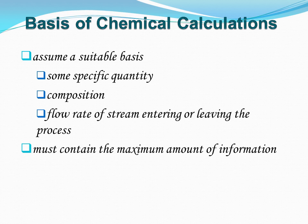If the flow rate is specified as a basis in the problem, assume it as a basis of calculation. If the basis is not specified in the problem, assume a suitable basis which will simplify the problem. While assuming a new basis of calculation, we have to see that it must contain the maximum amount of information of the process.